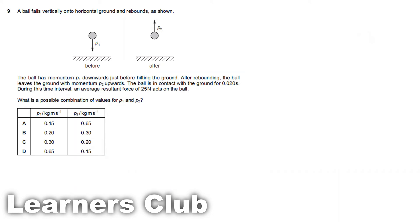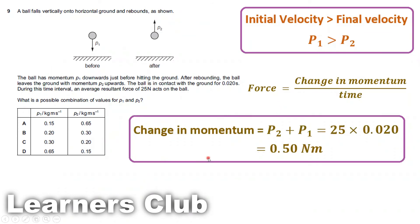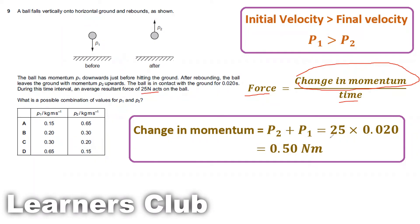According to Newton's second law, force equals rate of change in momentum, so change in momentum equals force multiplied by time, which is the impulse. The force is 25 N and the time is 0.020 seconds, so the change in momentum is 0.50 N·s. We need to find the option where p1 plus p2 equals 0.50.